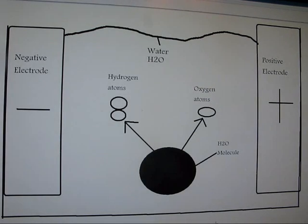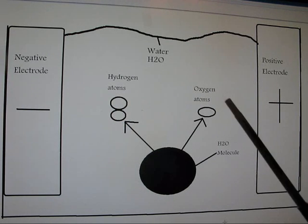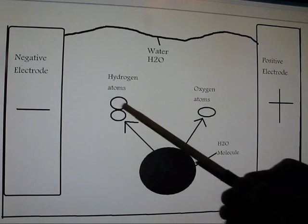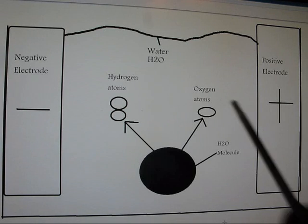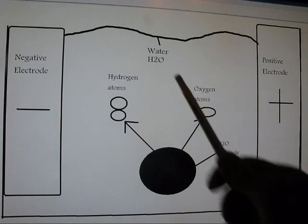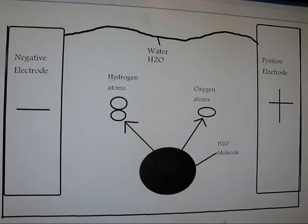Basically what happens is, as the conductivity of the water increases, some of the atoms split into their original hydrogen atoms and oxygen atoms. You can see that there are two hydrogen atoms here, and only one atom of oxygen, because of H2O, like I said at the start of the video.